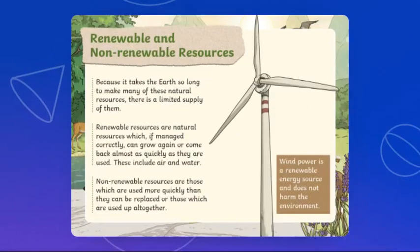Because it takes the earth so long to make many of these natural resources, there is a limited supply of them. Renewable resources are natural resources which, if managed correctly, can grow again or come back almost as quickly as they are used — this includes air and water. Non-renewable resources are those which are used more quickly than they can be replaced.